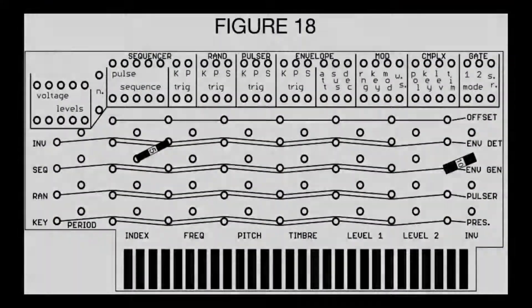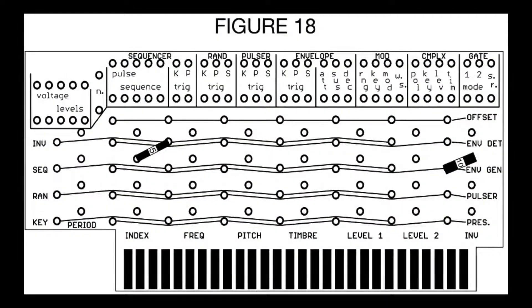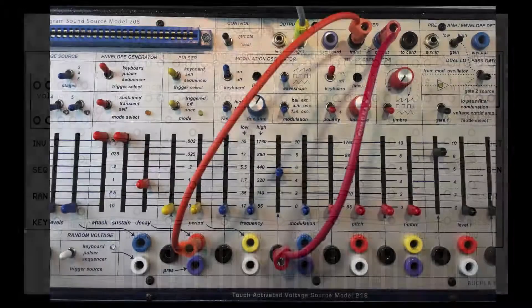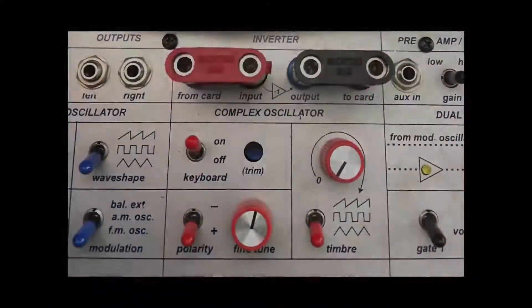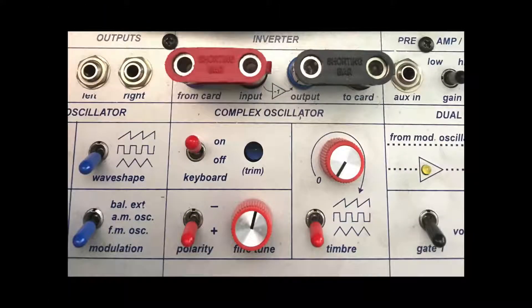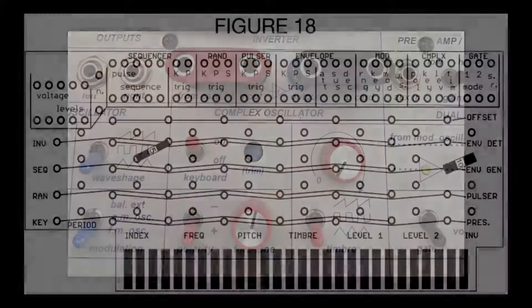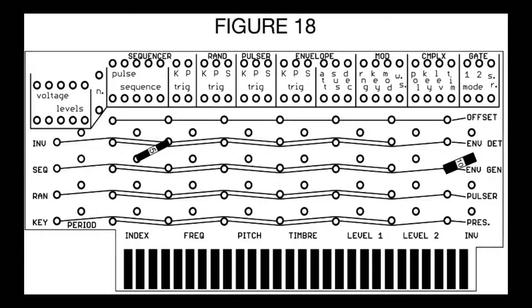Figure 18 describes how to set up a simple inverter patch, inverting the envelope generator's settings and sending them to the modulation index. To replicate this on the card, you need to set up the inverter on the faceplate with a couple of shorting bars. Once those are in place, soldering up the card shown in Figure 18 will render the desired effect.